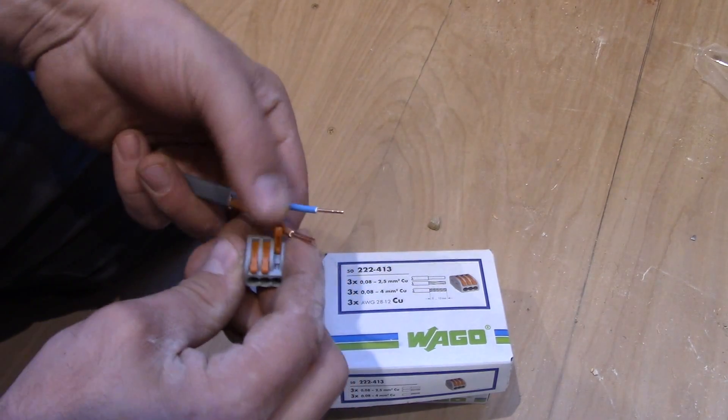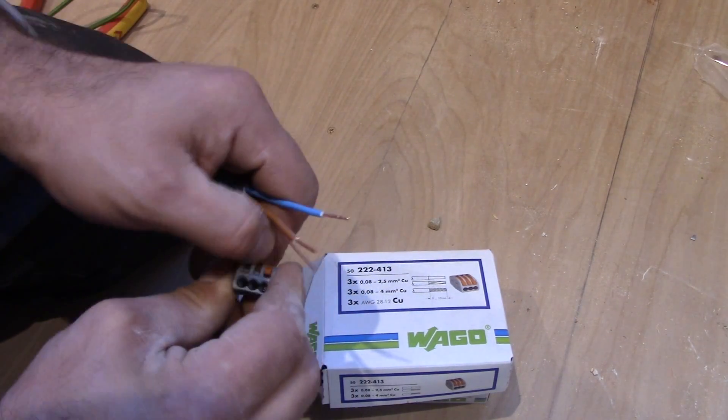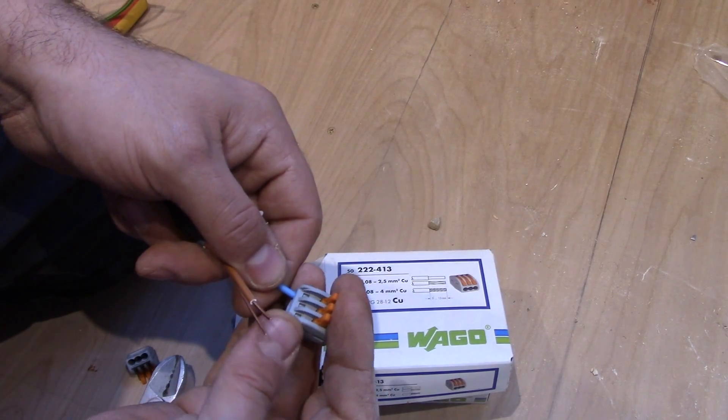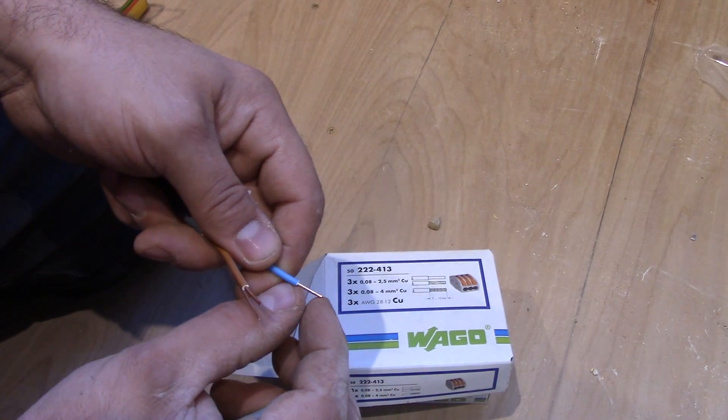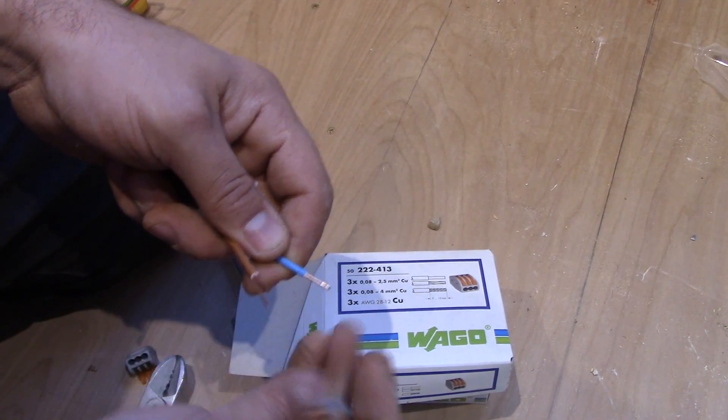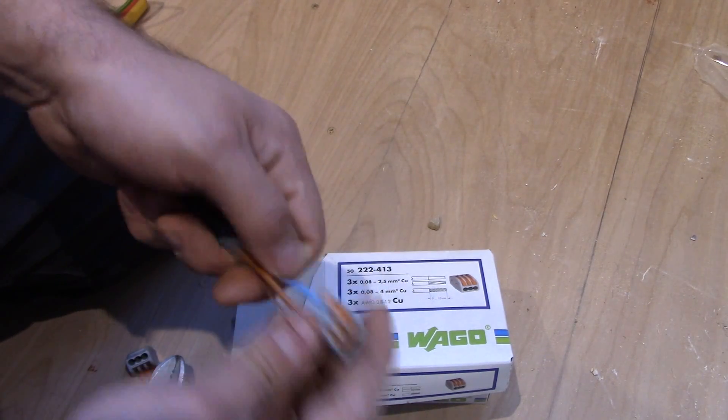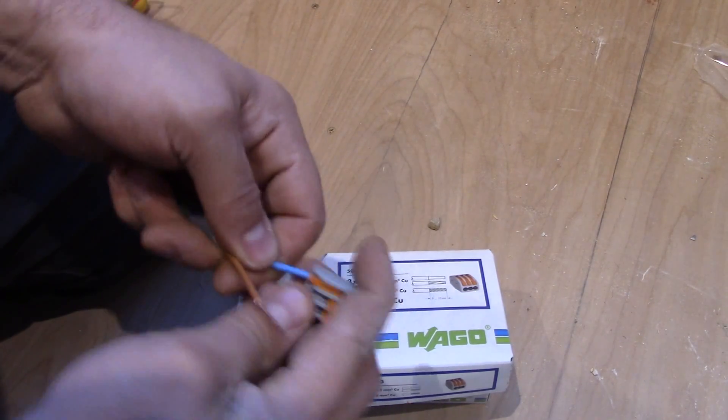It's got small levers. You have to lift up the levers, just slide in the cable, the wire. You have to strip it about one centimeter and slide in and put back the lever so it's tight.